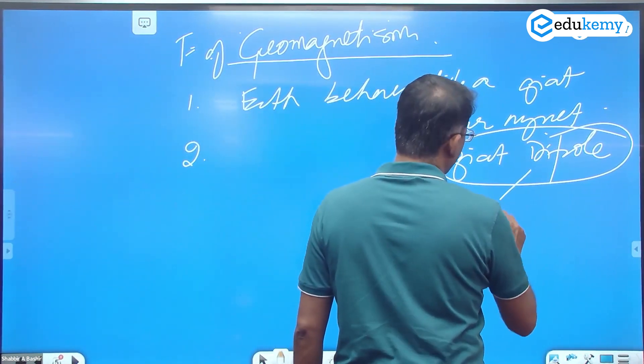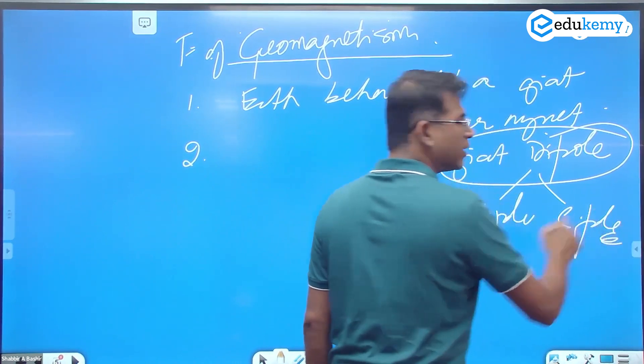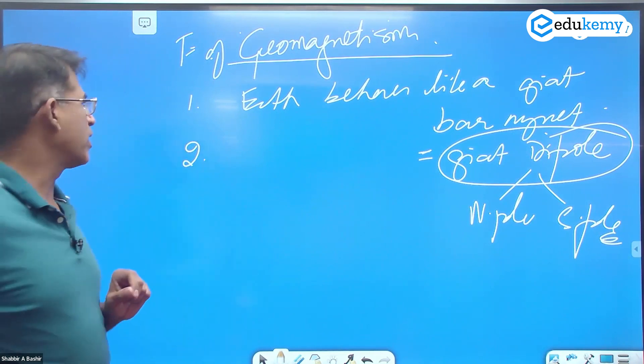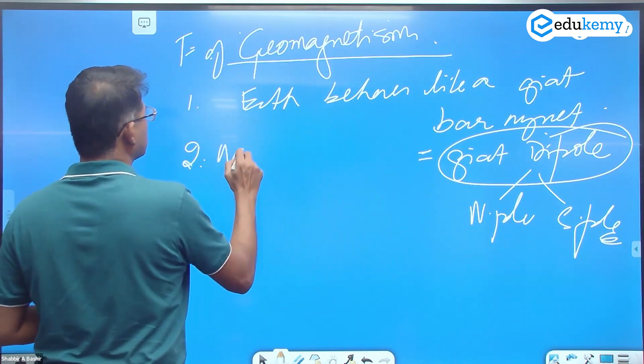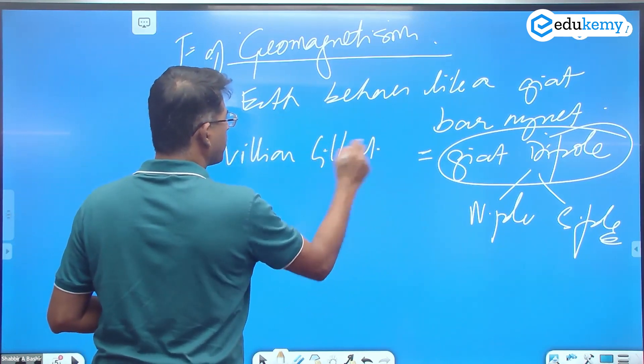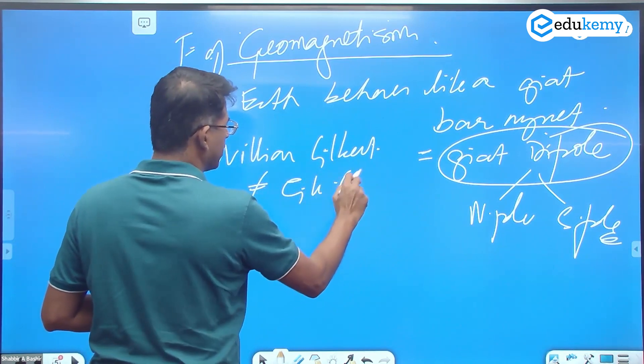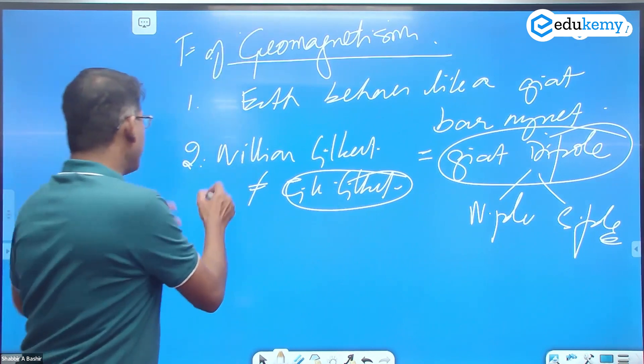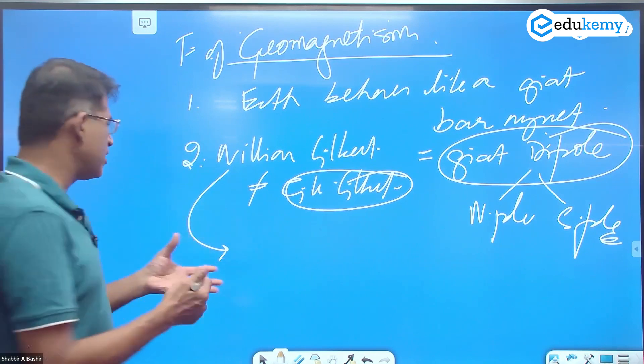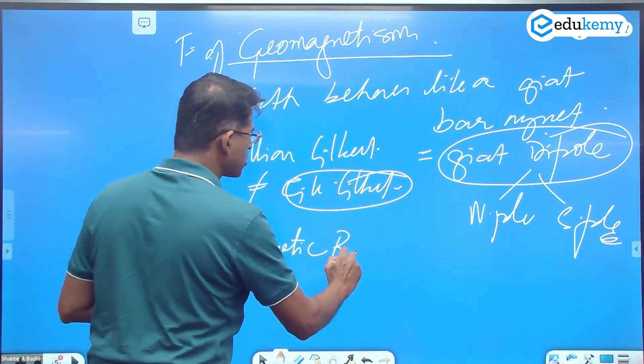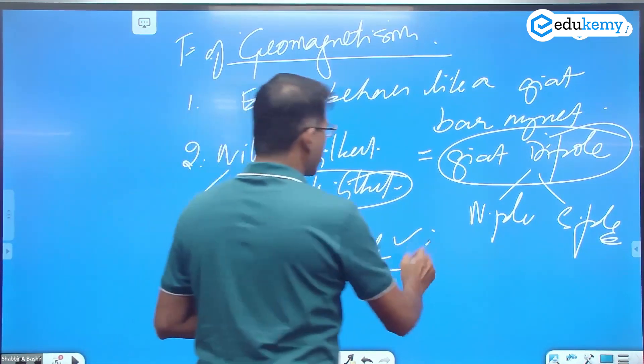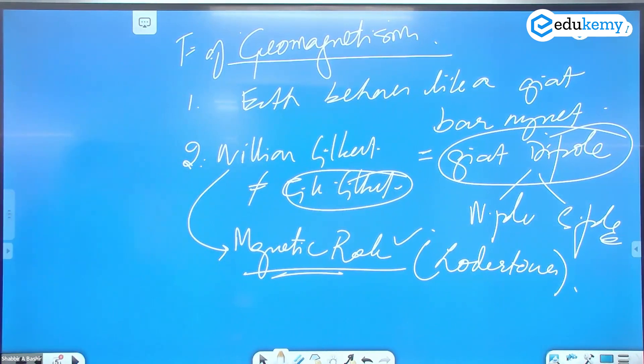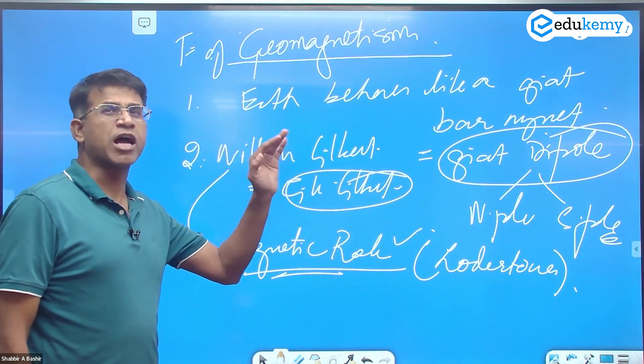A dipole means there is one north pole and one south pole. This is one of the fundamental properties of the Earth itself. This was discovered by a person called William Gilbert, who is different from G.K. Gilbert. William Gilbert is much older and discovered this by finding certain magnetic rocks called load stones.